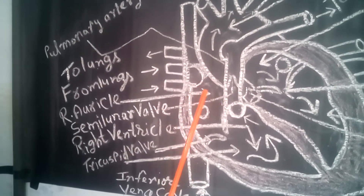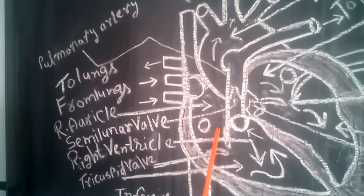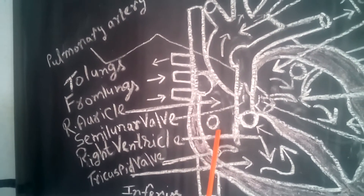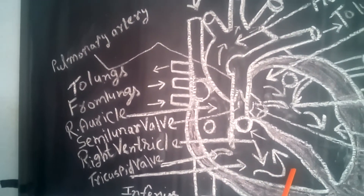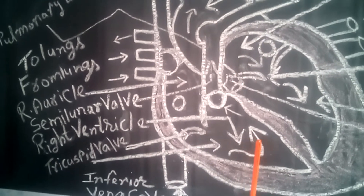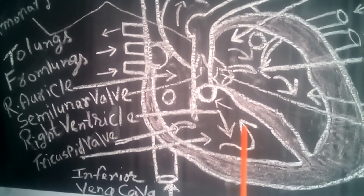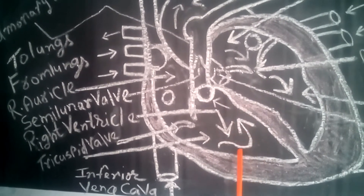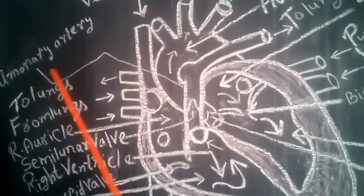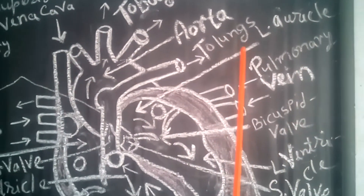From here, when the right auricle is filled with blood, it contracts. The tricuspid valve opens and blood is pumped into the right ventricle. When the right ventricle is filled with blood, it contracts, the tricuspid valve closes, and blood finds its path to the pulmonary artery and goes to the respective lungs — right lung and left lung — where it is purified and oxygenated.